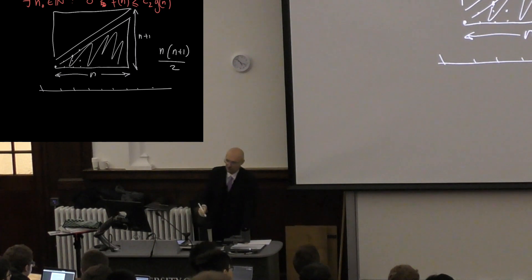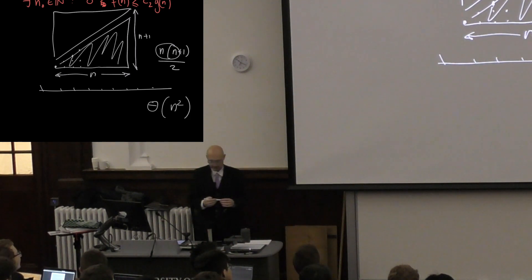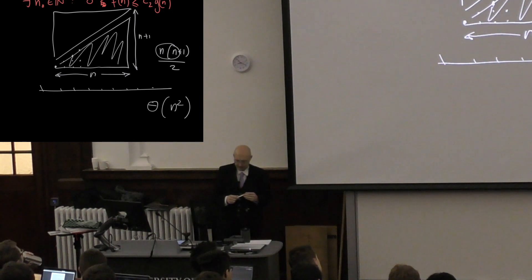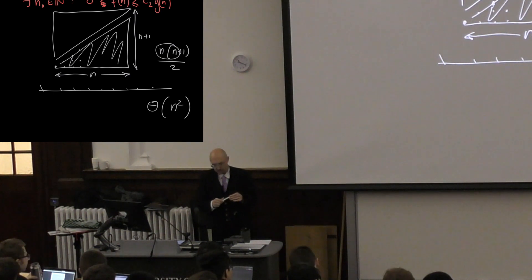So n times n plus one divided by two, as far as we are concerned all we care about is this part, so it is theta of n squared. So that is the cost of our insert sort in asymptotic terms. Then I say okay, that's one way of sorting, is this the best that can be done, probably no. And before I look at better ways of doing it, can I establish some boundaries on how sorting is going to cost?